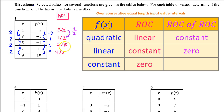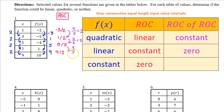Let's see how the rate of change is changing each time. From negative 3 to 1, the numerator is increasing by 4, so the rate of change is increasing by 4 over 2, which equals 2. From 1 to 5, that's another increase of 4 — again 4 over 2, which equals 2. From 5 to 9, same story: 4 over 2 equals 2. So the average rate of change is increasing at a constant rate, which means f(x) is quadratic.